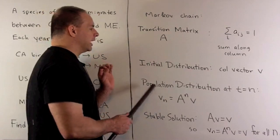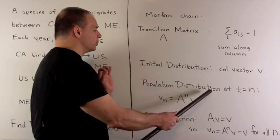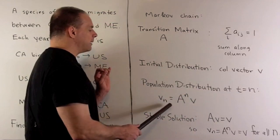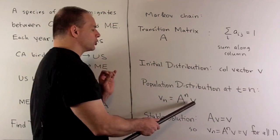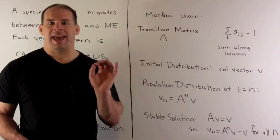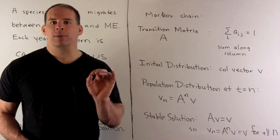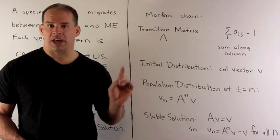If I want to know a population at time t equals n, we get the population distribution, I'll call it V_n, by taking our initial distribution V. Then, we apply our matrix A to it n times. Every time a year goes by, we just apply A one more time.